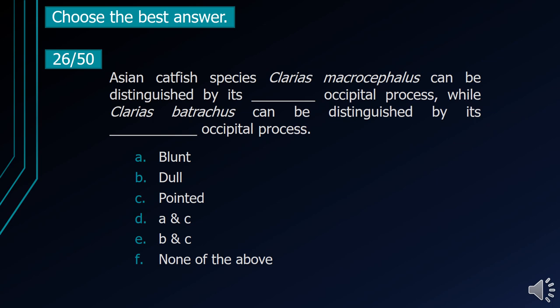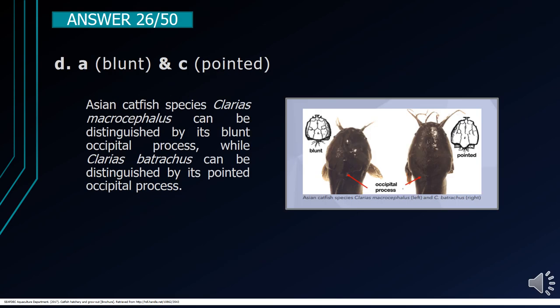Number 26. Asian catfish species Clarias macrocephalus can be distinguished by its blank occipital process, while Clarias batrachus can be distinguished by its blank occipital process. A. Blunt. B. Dull. C. Pointed. D. A and C. E. B and C. F. None of the above. The correct answer is letter D, A and C. Clarias macrocephalus can be distinguished by its blunt occipital process, while Clarias batrachus can be distinguished by its pointed occipital process.